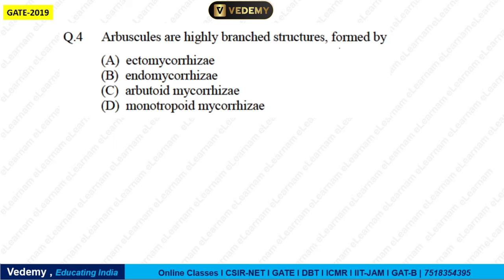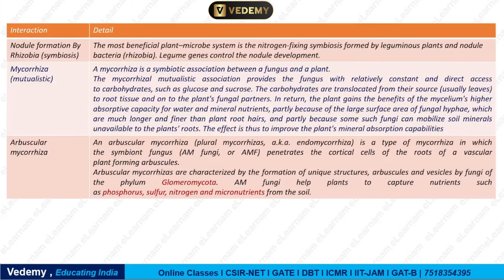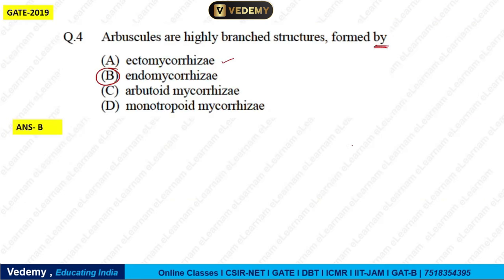The next question: arbuscules are highly branched structures formed by which type of mycorrhiza? Options are ectomycorrhiza, endomycorrhiza, ericoid mycorrhiza, and monotropoid mycorrhiza. Arbuscules are formed by endomycorrhiza. Arbuscular mycorrhiza is a type of endomycorrhiza. So the correct answer is endomycorrhiza.